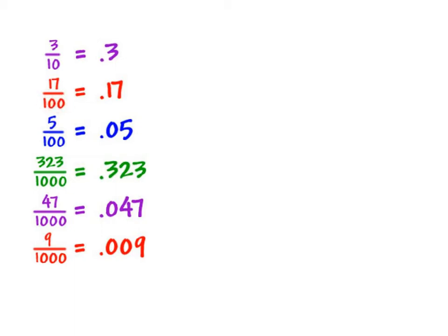Here the denominator is 100, so the 7 is going to go in the hundredths place value, and the 1 follows in the tenths. Here there's a 5, so the 5 is going to go in the hundredths place value — there's no other number, so you just put a 0 to show the correct place value. Here the last number in the numerator is a 3, it's going to go in the thousandths place value, and the 3 and 2 just follow in. The 7 here at the end is going to go in the thousandths place value, the 4 follows in, and then you have to add a 0 to show the place value correctly. And the same with the 9 — it goes in the thousandths place value, but then you have to fill in two zeros.